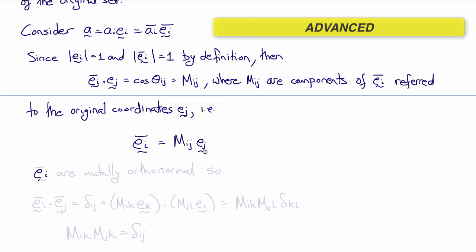Now ei bar are also mutually orthonormal, meaning they're also orthogonal and have unit length, just like the original unit vectors. So therefore, ei bar, ej bar dotted together must equal delta ij, the Kronecker delta, just as it was for ei and ej. And using this expression here, that gives us mik ek dotted with mjl el, which is rearranging this mik times mjl times ek dot el, which is delta kl. Now delta kl just turns k into an l or l into a k, which simplifies to mik mjk, or equals delta ij.